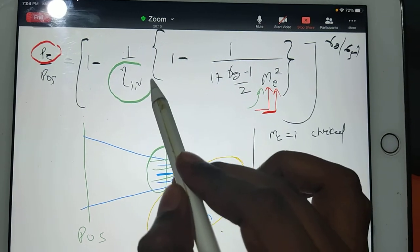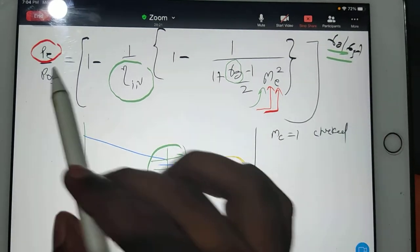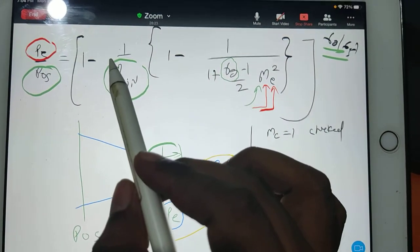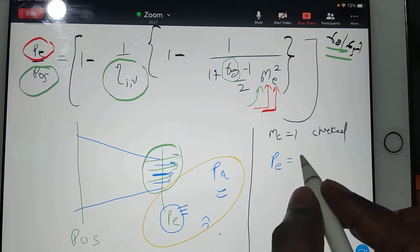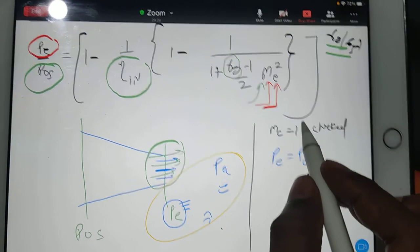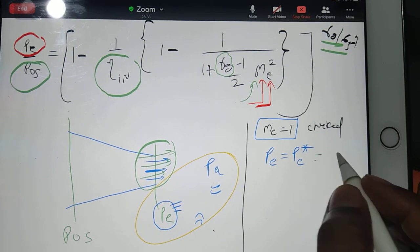Efficiency of the nozzle should be given, gamma value 1.3 or whatever should be given. Substitute everything here. p0.5 we've already found out, so you will be getting your pe value that you will call pe star, because you are finding it out at M equals 1. So you will be getting a certain value.